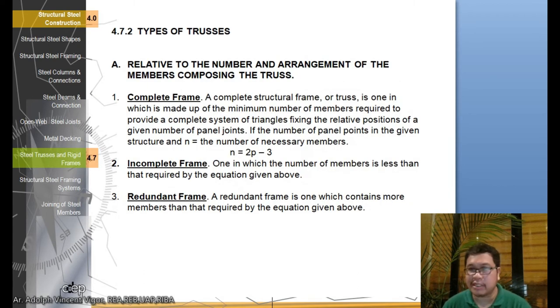Let's move on to the types of trusses. Relative to the number and arrangement of members, a complete frame is made up of the minimum number of members required to provide a complete system of triangles. If the number of panel joints is P and N is the number of necessary members, then N equals 2P minus 3. An incomplete frame has fewer members than required, and a redundant frame contains more members than required.